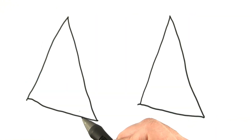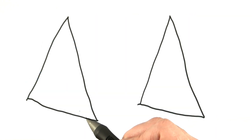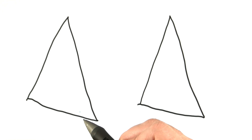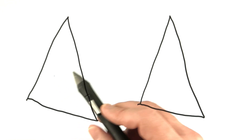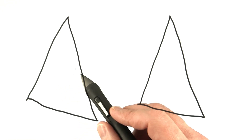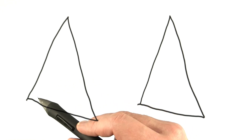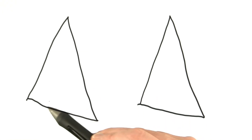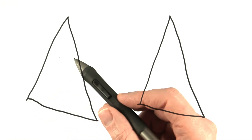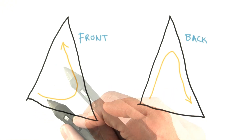We can set whether backface culling is enabled or disabled. But how do we determine if a triangle is a front face or a back face? There are just three points defining each triangle, and there's no flag stored for additional information.